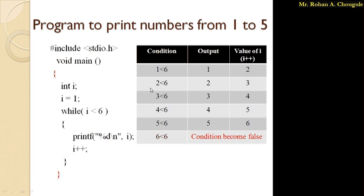Now value of i is 2. The condition 2 is less than 6 is true, so control enters the while loop, prints 2, then increments i to 3. Again the same process: 3 is less than 6, so it prints 3 and increments i to 4. Then 4 is less than 6, condition is true, it prints 4 and increments i to 5.